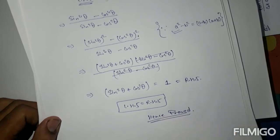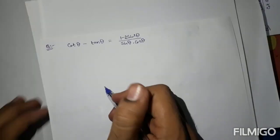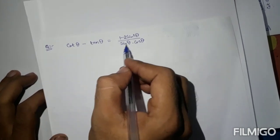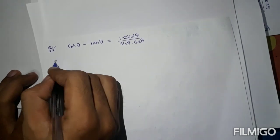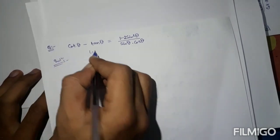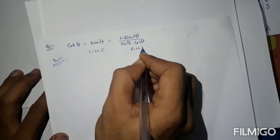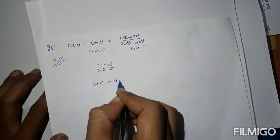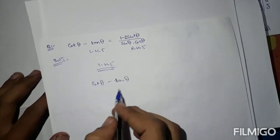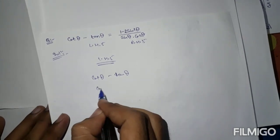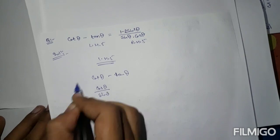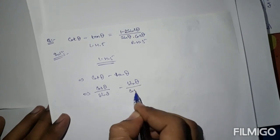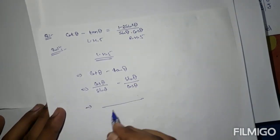The next question is: cot theta minus tan theta equals (1 minus 2 sin²theta) upon (sine theta times cos theta). We follow the same procedure. Take LHS: cot theta minus tan theta. We write cot theta as cos theta upon sine theta and tan theta as sine theta upon cos theta.